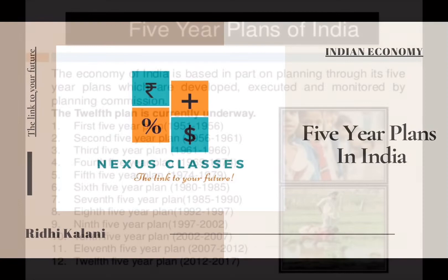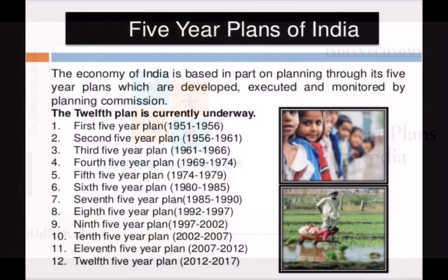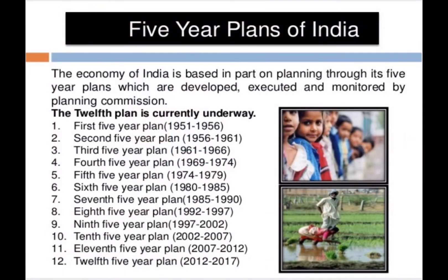Let's begin with the formulation of plans, their period and timing. The First Plan began in 1951 and ended in 1956. The Second Plan ran from 1956 to 1961, the Third from 1961 to 1966. Then we had a gap from 1966 to 1969, followed by plans from 1969 to 1974, and 1974 to 1979. The 1979 plan was terminated in 1978 due to political disturbances.